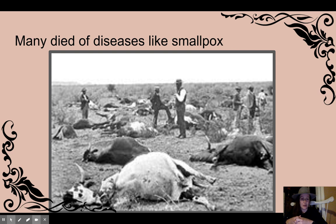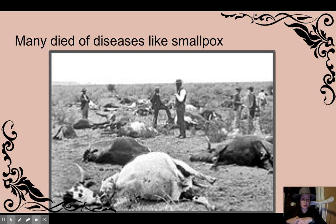Europeans did try to find drug treatments for these diseases. However, many of these treatments featured arsenic-based drugs, and sometimes these drugs killed as many people as the disease itself. The British also tried quarantining certain groups to prevent disease spread. As we look at the epidemic we face today with coronavirus, it is worthwhile to examine what worked and what did not work during these outbreaks in the late 1800s and early 1900s.